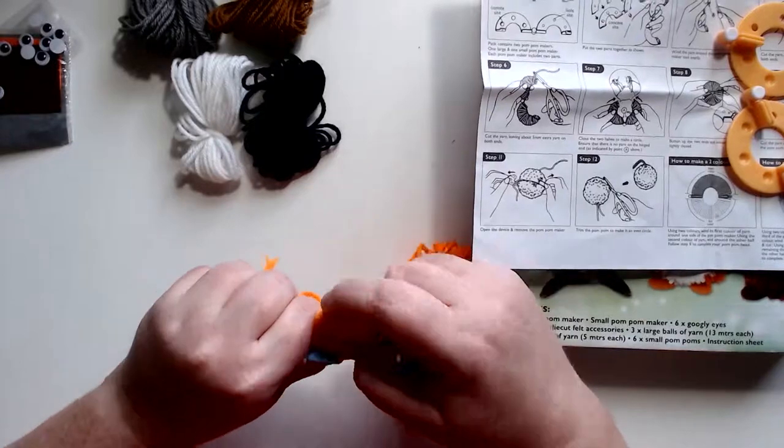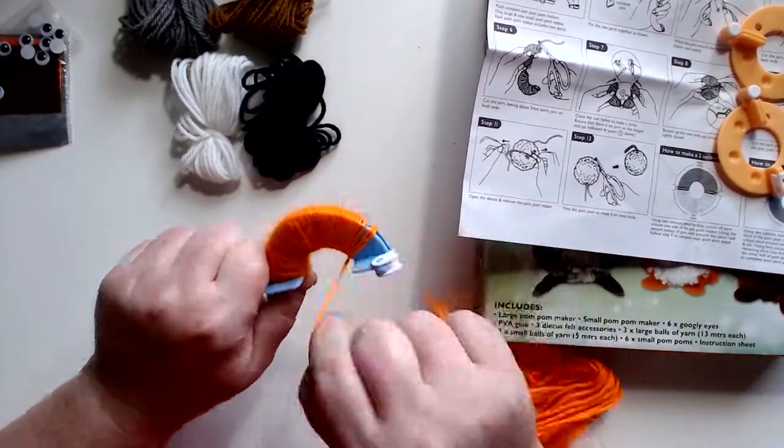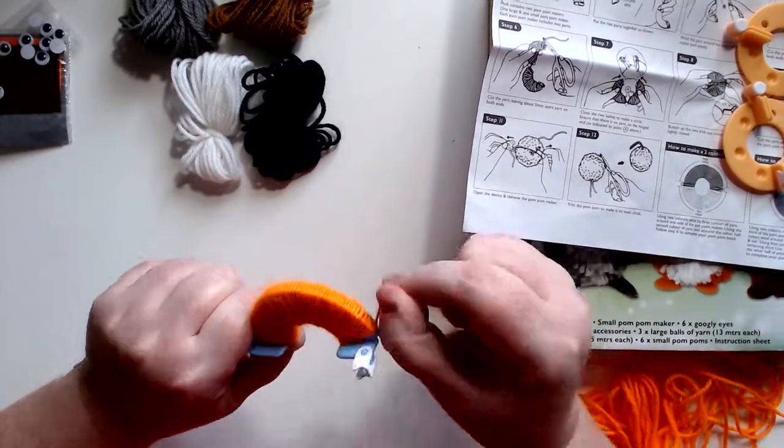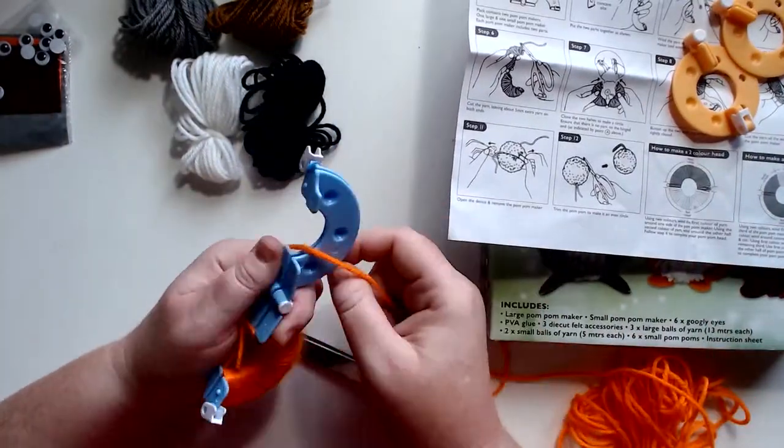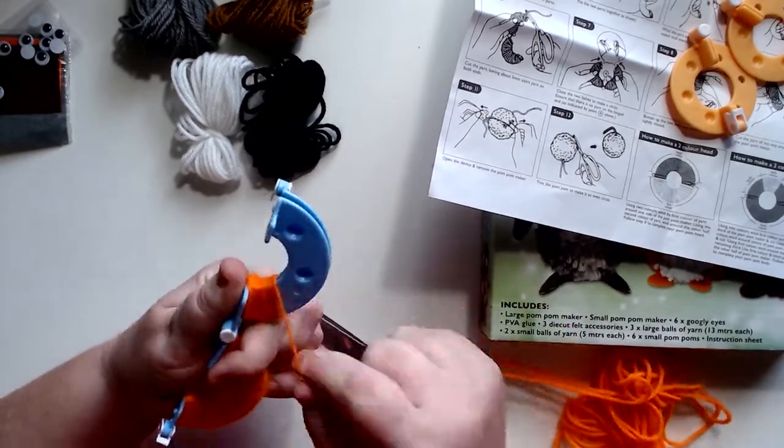Now you can definitely make pom-poms without using a special kit like this. You just need to make two doughnut shapes out of some cardboard. You can just use a pizza box or a cereal box or something like that. I used to make these all the time as a kid, and then you just need to make a little small ball of wool that will fit in the center of the doughnut shape and you wrap it around like this.